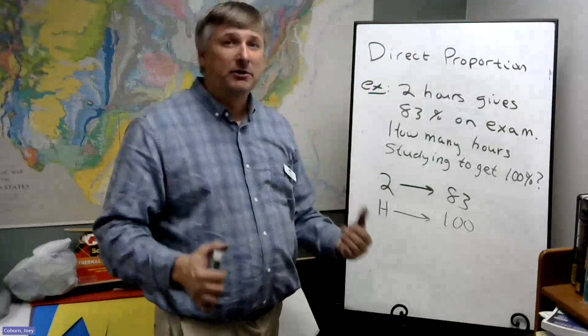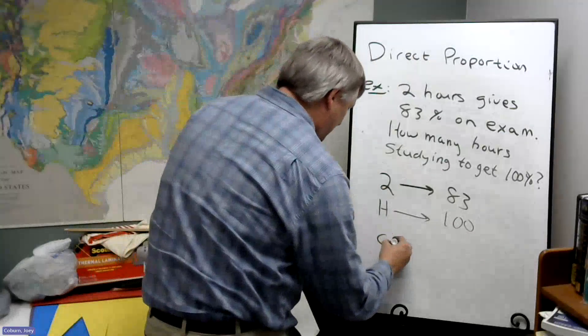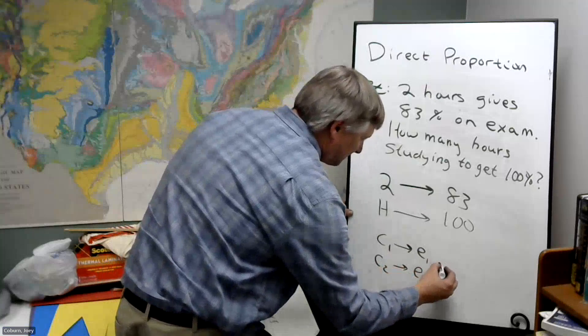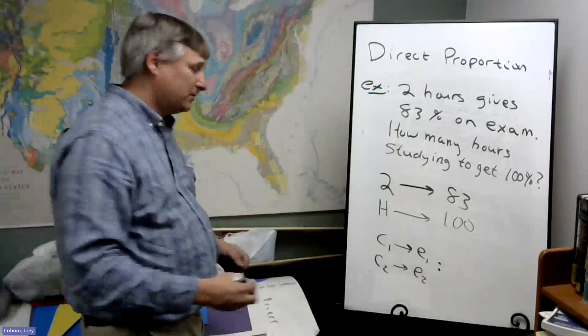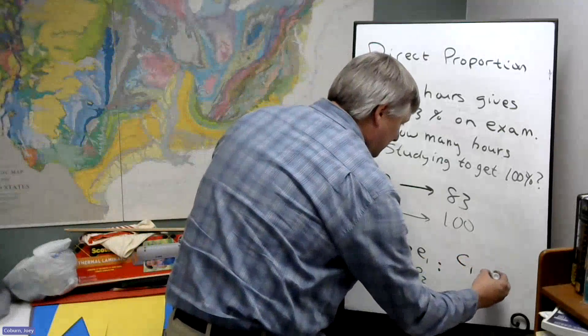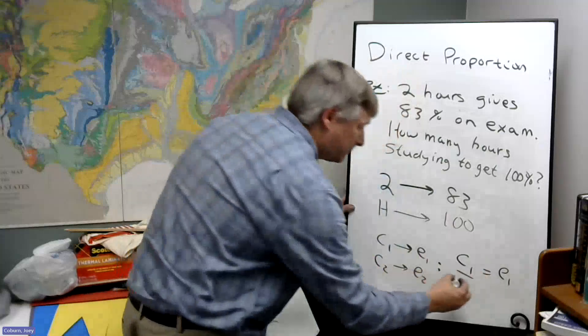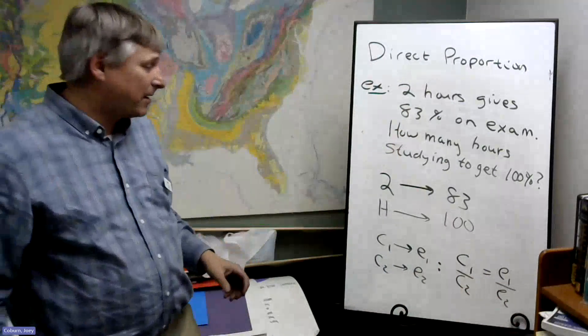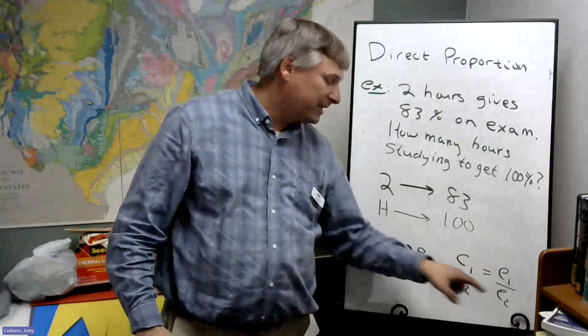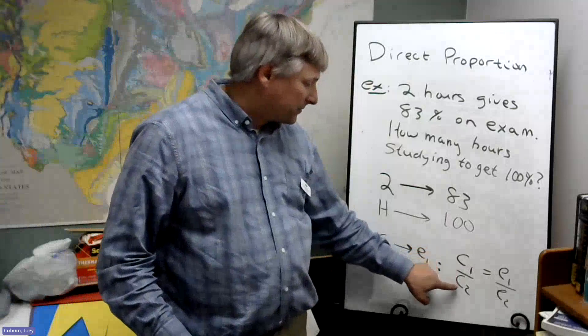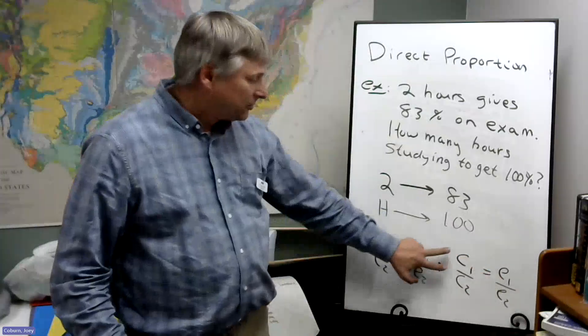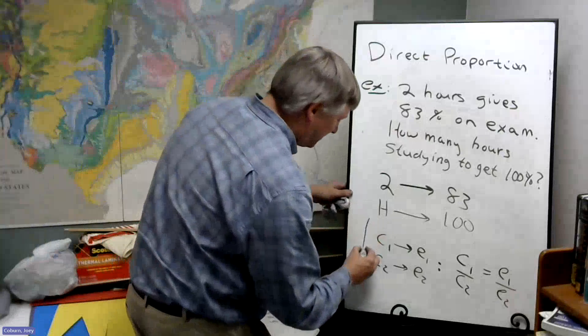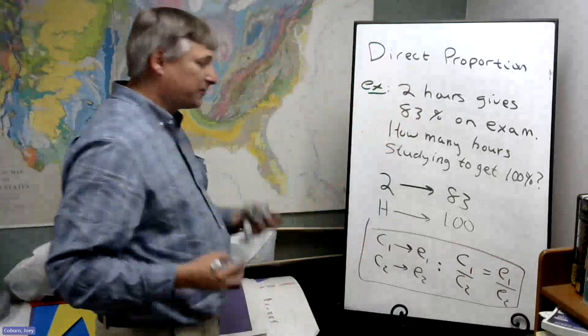For direct proportion, it's going to be the following. We have cause one leads to effect one and cause two leads to effect two. Then the proportion we're going to use is C1 equals E1, and below C1 we'll put C2, below E1 we'll put E2. Or you can think of it as C1 over C2, E1 over E2. Ratio of the causes equals ratio of the effects. This is the formula we're going to want to hang on to for setting up our proportion.